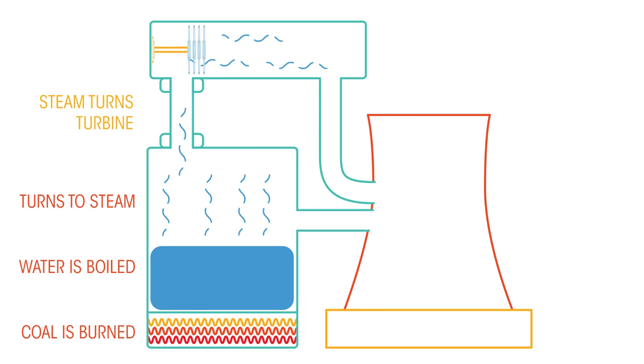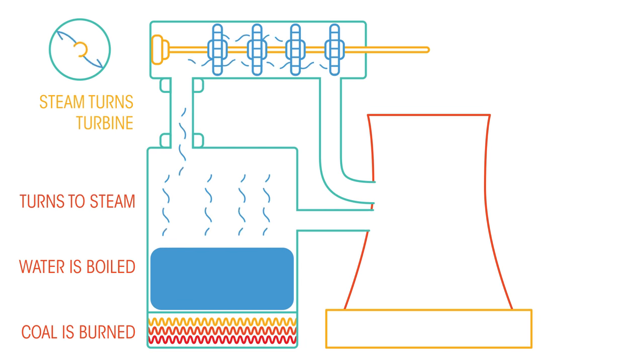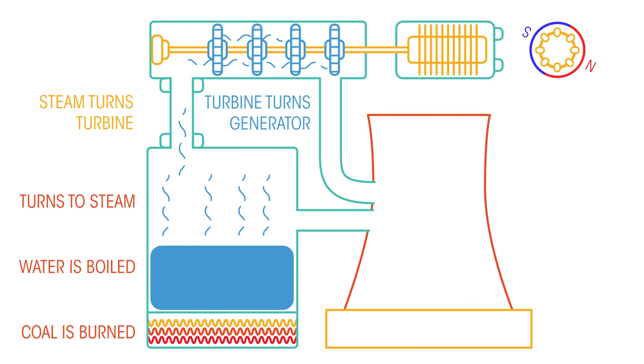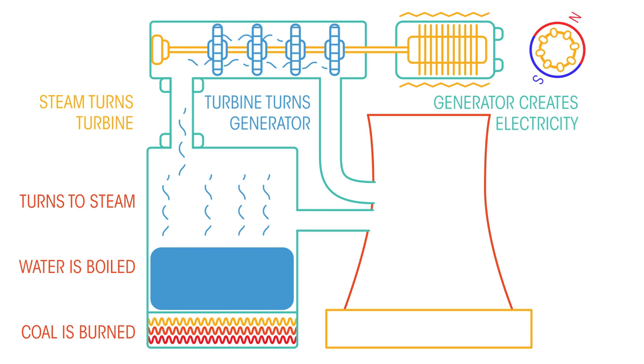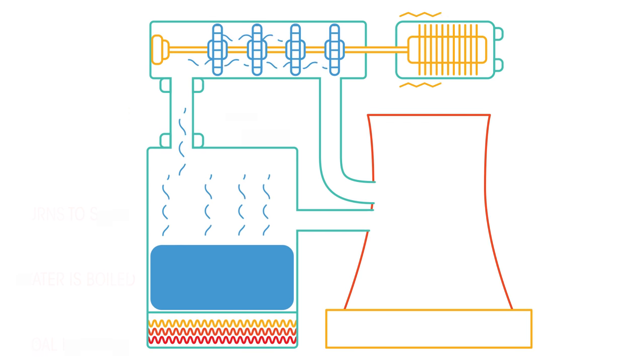This steam is used to turn the blades of a turbine. A turbine looks like a fan or a wind turbine. The turbine turns a generator. Inside wires turn within magnets to generate electricity. So that was a fossil fuel power station.